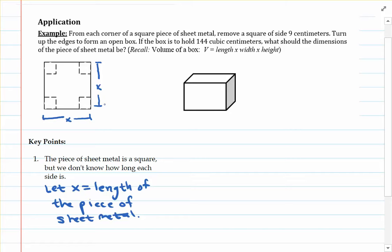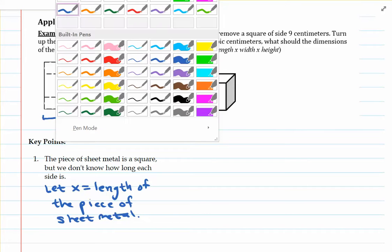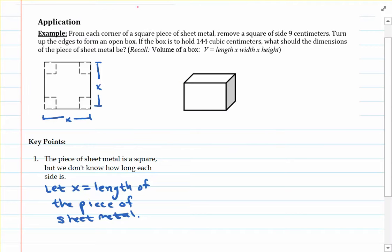Now, according to the problem directions, how we're going to form this box is by removing four squares from each of the corners of the original piece of sheet metal. Now, it does say that the side length of each of those squares that are being removed are nine. So essentially, we're going to be removing a nine by nine square from each corner of this piece of sheet metal. So I'd like to go ahead and indicate that on this diagram as well.